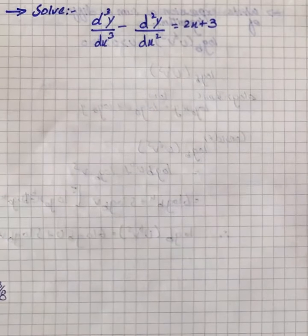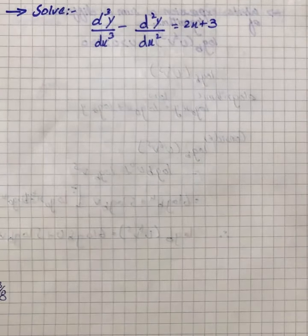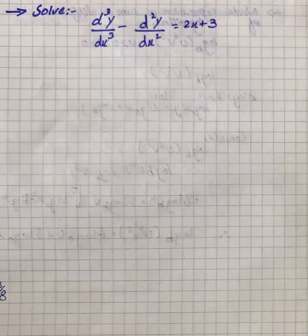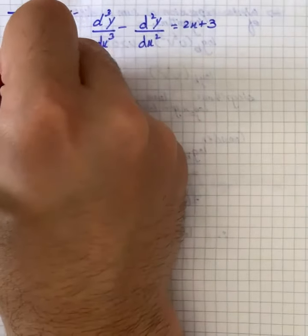The question says that we have to solve d³y/dx³ - d²y/dx² = 2x + 3. First of all, the equation could be written as D³ minus D² into y equals 2x plus 3.